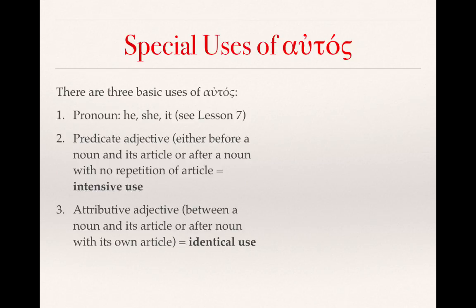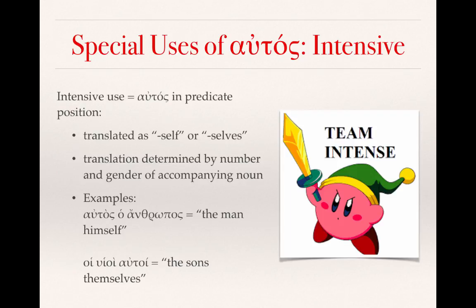Third, there is what is known as the identical use of autos, when it's functioning like an attributive adjective — between a noun and its article, or after a noun with its own article. The intensive use places autos in the predicate position, and we translate it with self or selves, determined by the number and gender of the accompanying noun. For example, autos ho anthrōpos would translate as the man himself, and hoi huioi autoi as the sons themselves.